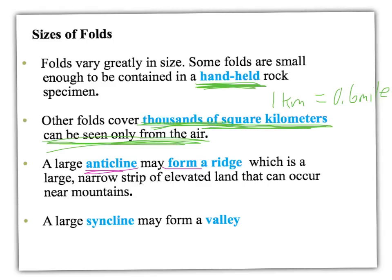If we have a really big, long anticline, we might see a ridge — a long hill line, a very narrow strip of elevated land. We can often see this near mountains forming where two plates are colliding, like the Himalaya Mountains, which formed because India collided with Asia. India's crust is a little denser, so it subducted and pushed up the Himalayas, which are still growing every year by about a quarter of an inch. If an anticline makes a ridge, a large syncline could form a valley.